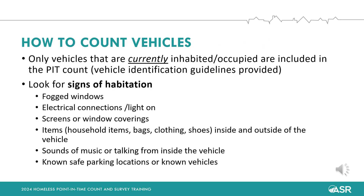Listed here are some ways to identify vehicles that are housing individuals. We want to maintain a respectful distance, so please do not walk up and look inside the vehicle, knock on vehicle doors or windows, or shine flashlights into the vehicle. Instead, here are some signs to look for that can indicate whether somebody is living in the vehicle: a vehicle with windows that are fogged, partially open, or blocked; electrical connections or generators; screens or window coverings; items inside and outside of the vehicle including household items, bags, clothing, etc.; and sounds of music or talking coming from inside the vehicle.